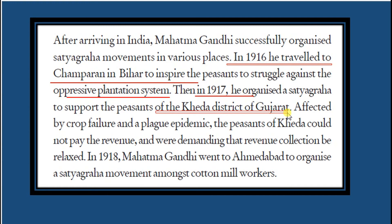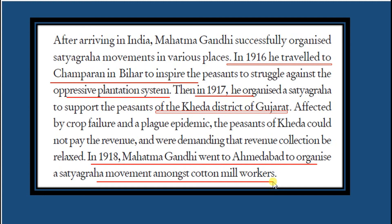In 1918, Gandhi went to Ahmedabad to organize a Satyagraha amongst the cotton mill workers. We will not go into very detailed aspects of the chapter here since this is a revision. Please try to understand the meaning of Satyagraha and the early activities led by Mahatma Gandhi after reaching India in 1915 — specifically 1916, 1917, and 1918. Please make a note of these points.